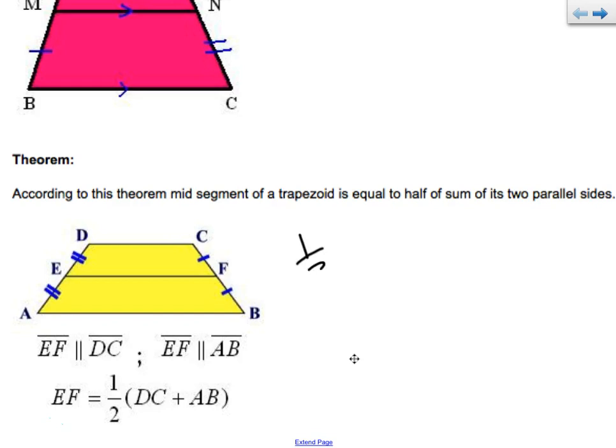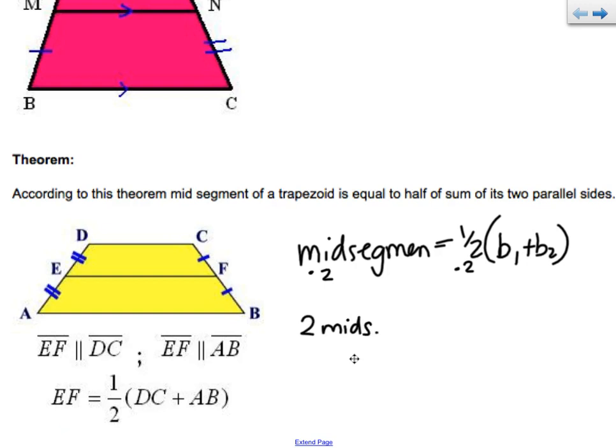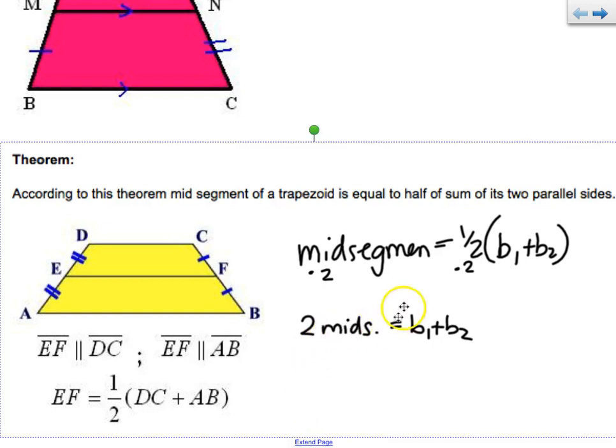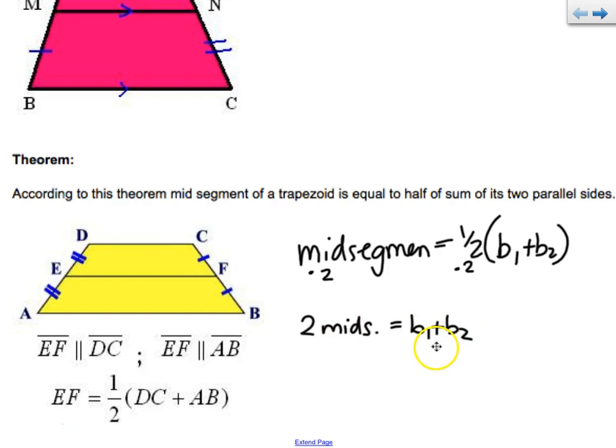In layman's terms, the midsegment equals half of your base one plus your base two. Or since we hate fractions, if I times by two to get rid of that fraction, two of the midsegments is going to equal base one plus base two. So if you don't want to deal with a half, you can double the midsegment and equal it to both the bases added up together. It's up to you. How cool. Let's look at some problems.